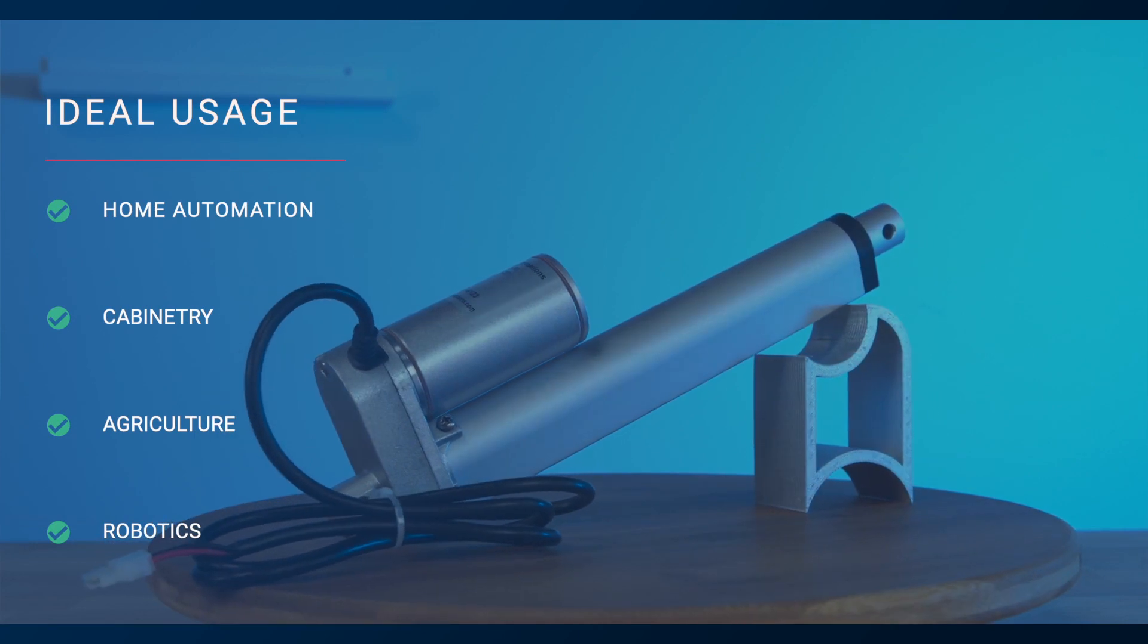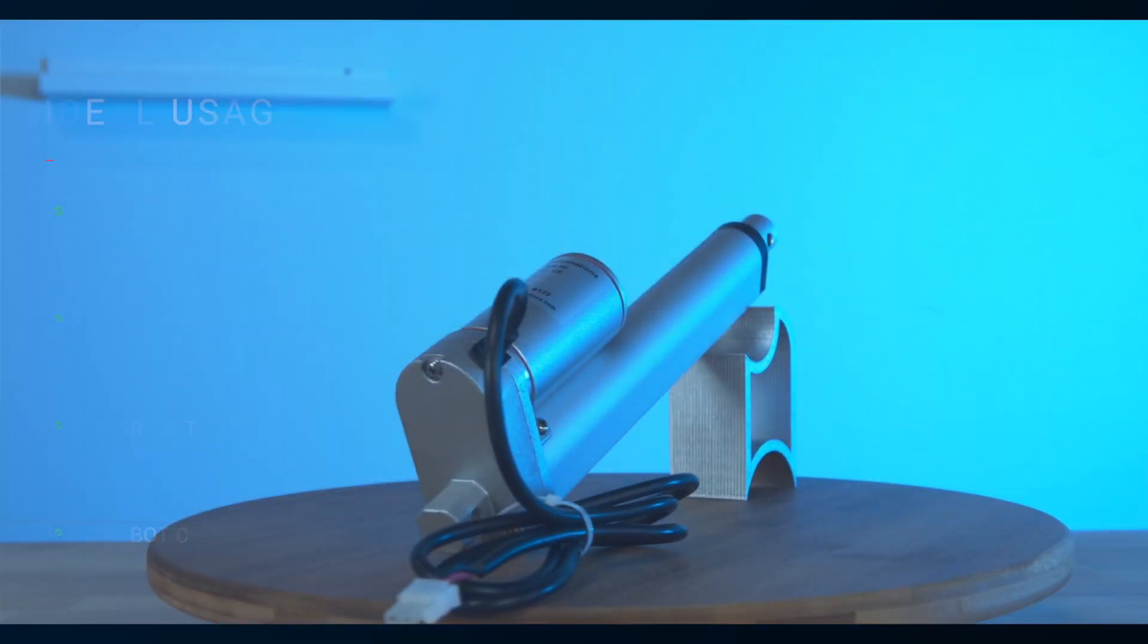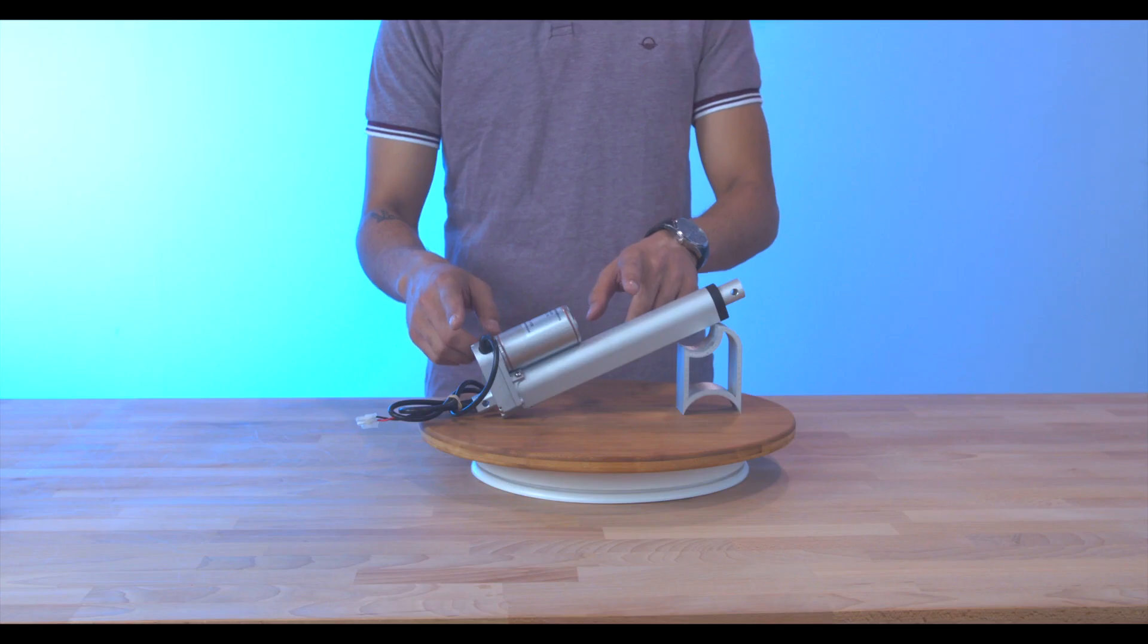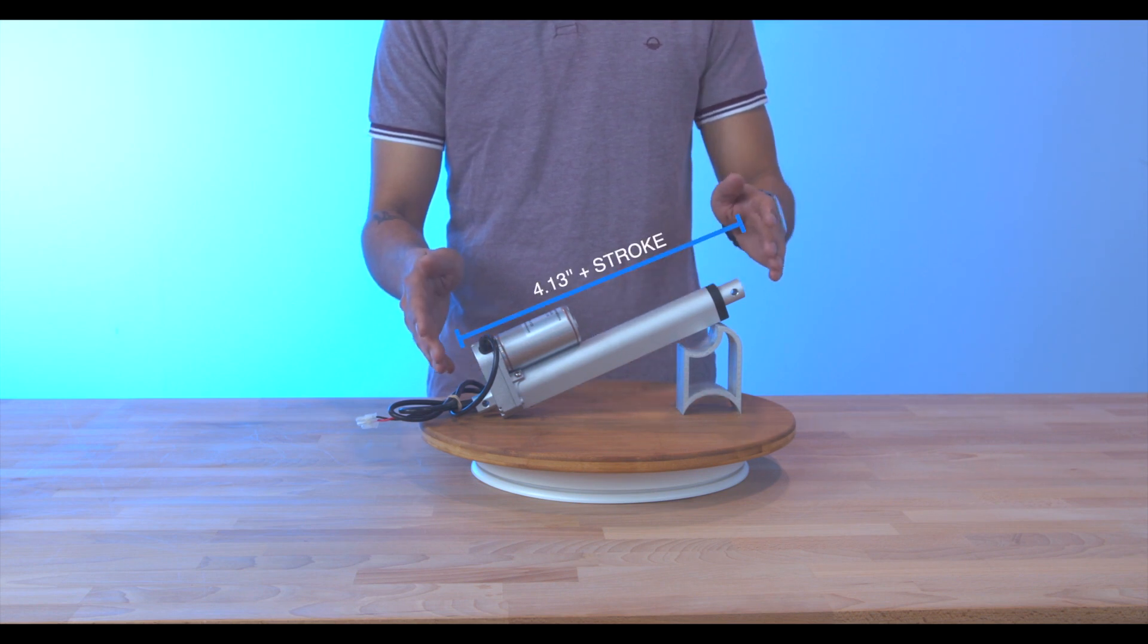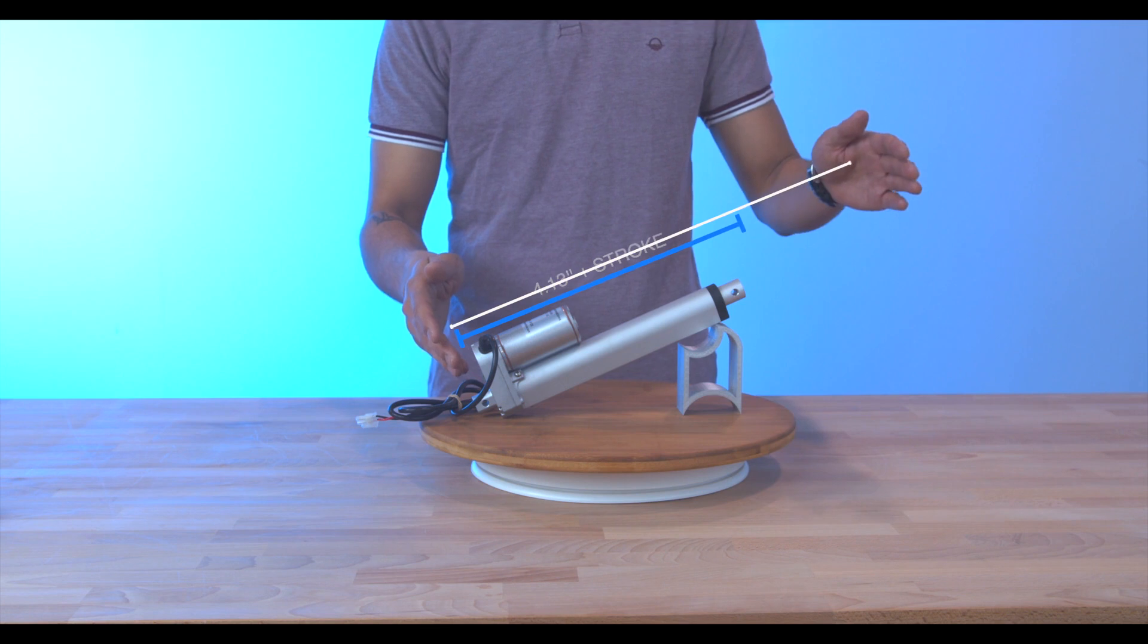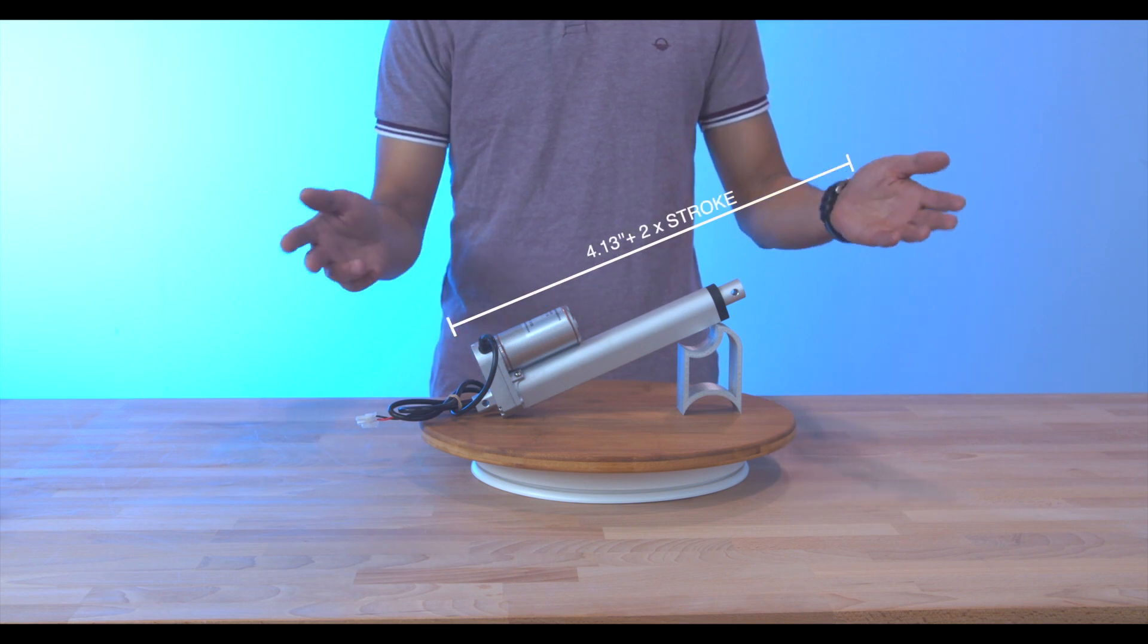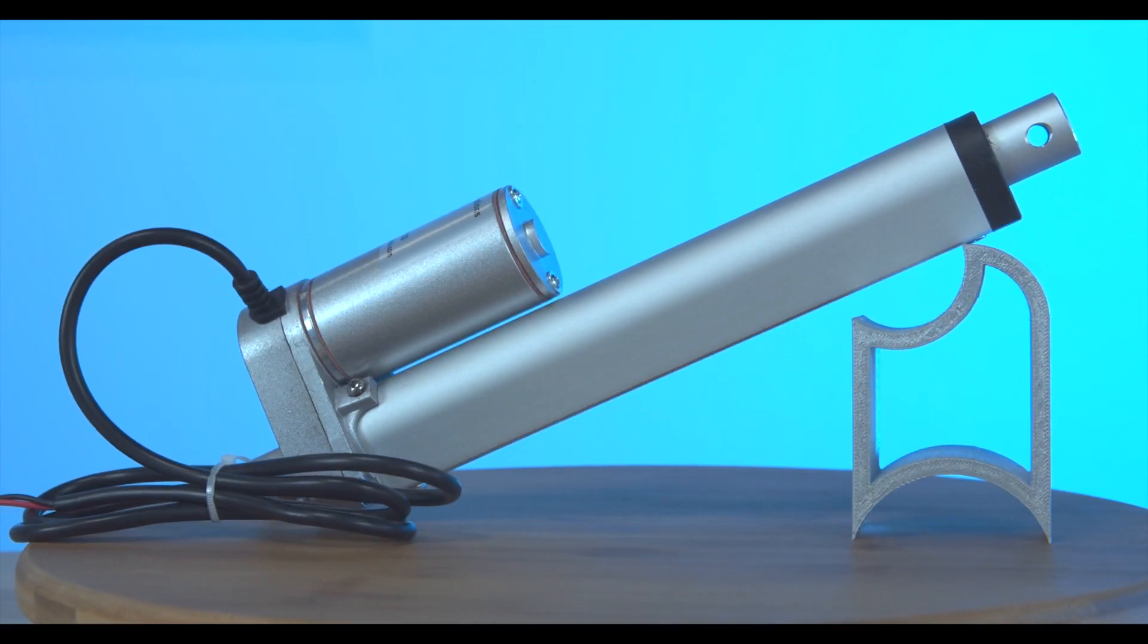The PA14 mini linear actuator has a retracted length of 4.13 inches plus the stroke, and an extended measurement of 4.13 inches plus two times the stroke. For the purposes of this video, we're using the PA14-650.